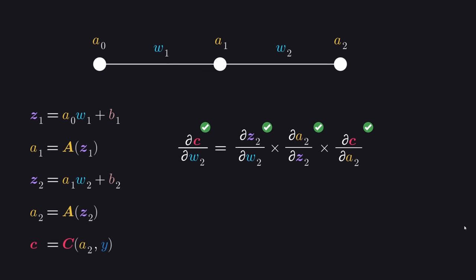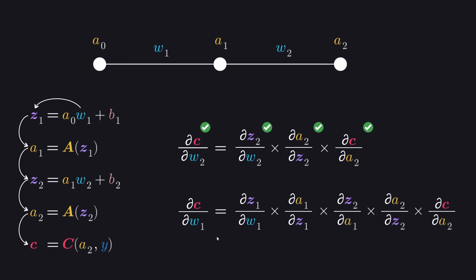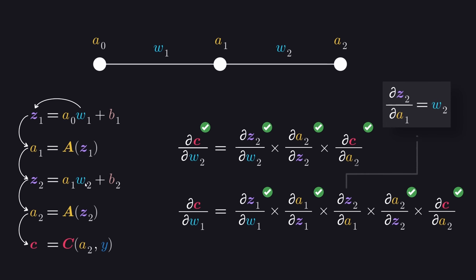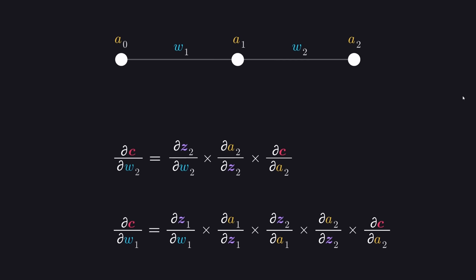We now know how the cost is affected by the second weight. For the first weight, we again use the chain rule to figure out how w1 affects the cost. Taking a closer look, two of the partial derivatives at the end are the exact same as those we already calculated. Then the derivative of a2 with respect to z2 is the same thing just taking place in a different layer, and similarly for the activation derivative. All we need to worry about is how the weighted input changes in response to the input - and again from the equation, the amount of effect a change to the input has on the weighted input is determined entirely by the value of the weight. So we now know how the cost is affected by both weights in our tiny network.